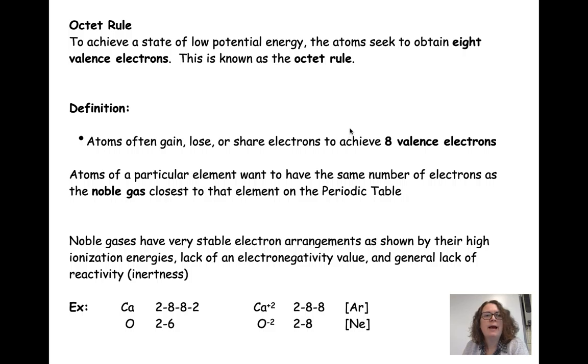One of the ways that atoms achieve stability is by following something called the octet rule. The octet rule states that to achieve a state of low potential energy, atoms seek to obtain eight valence electrons. This is the octet rule. All of our atoms have a certain number of valence electrons, and they can gain or lose electrons to have eight total valence electrons.